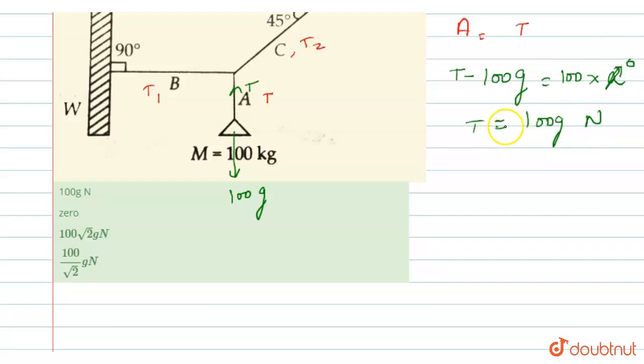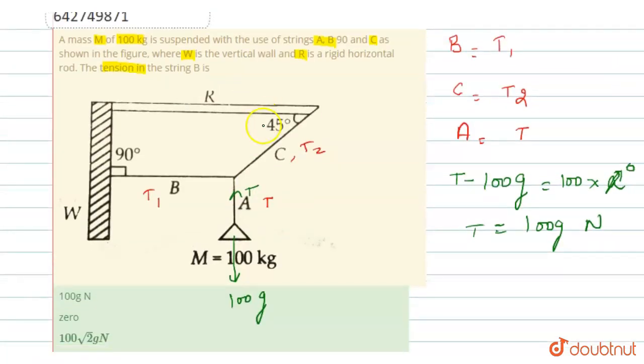100g Newton. Now if we extend this line, if this angle is 45 degrees and this is also 45 degrees, now we resolve the T2 tension into two components. This is T2 cos 45 degrees, and the vertical component is T2